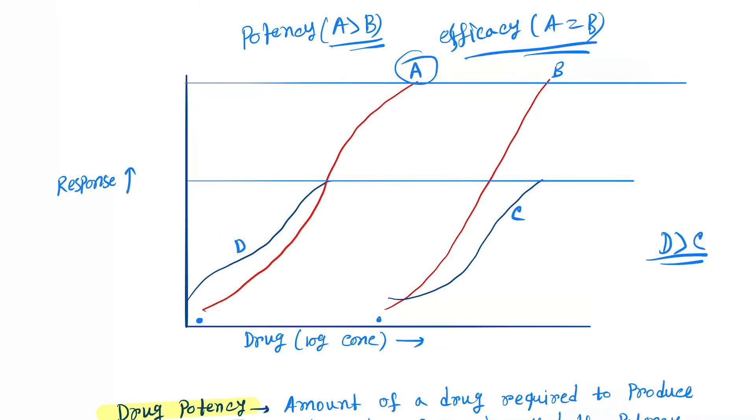Now among graph D and A, which is more efficacious? That is the drug which produces maximum effect. Here A is producing this response and D produces this response. The answer will be efficacy A is greater than D.